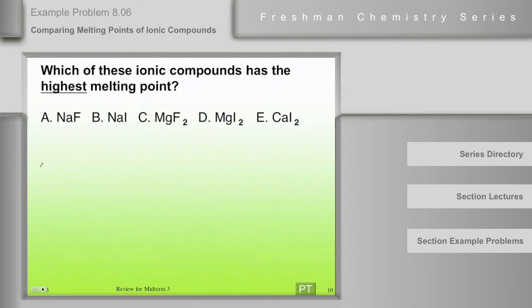Right? Because that was how much energy is given off when the ions come together in the gas phase and come down and form the solid. So if you're going to melt them, you have to partially overcome that. So we have to evaluate these in terms of lattice energy.